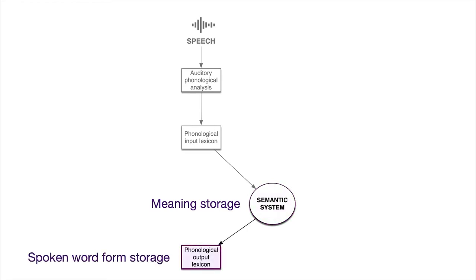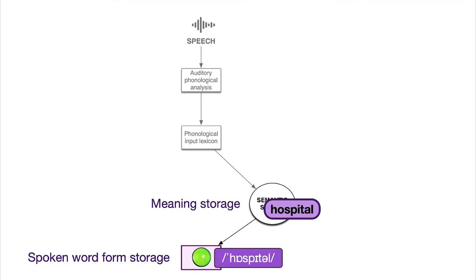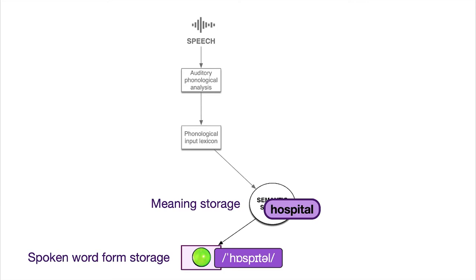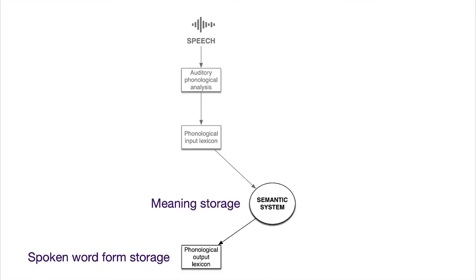The phonological output lexicon is much like the phonological input lexicon — it stores the spoken word form — and this is separate from the comprehension of a word. It seems like they should be the same thing, but they're not, because they can be differentially impaired. So with our example of 'hospital': yes, there's a concept for that, and that word sounds like this. We have our concept, we have a word for that concept — what's next?